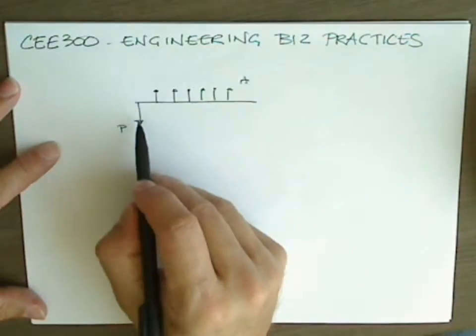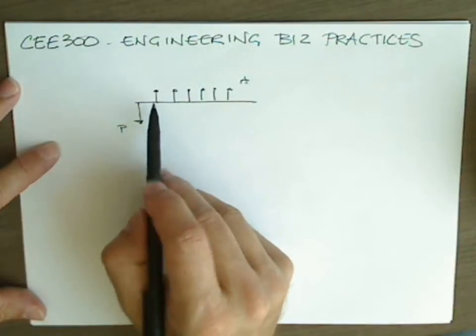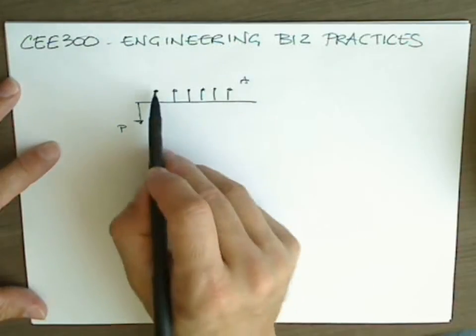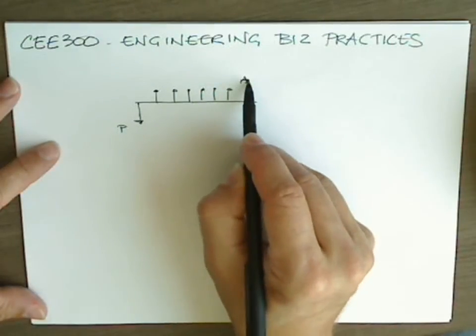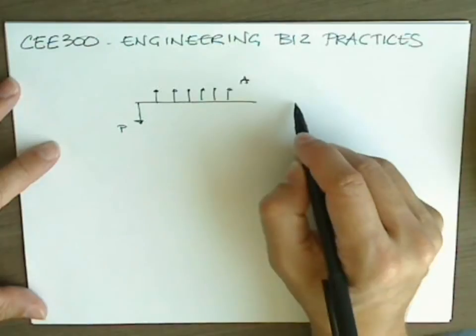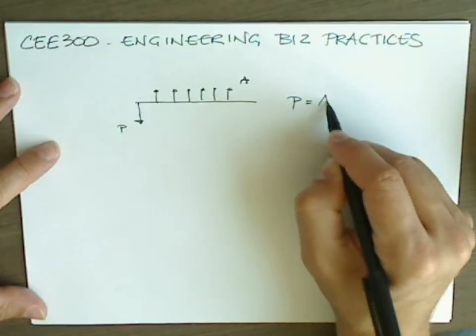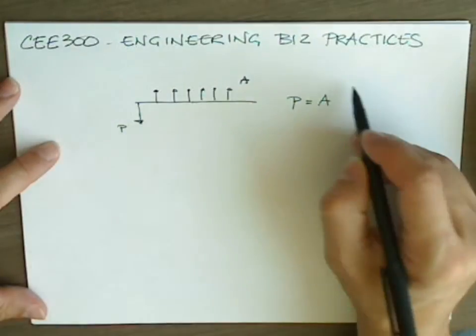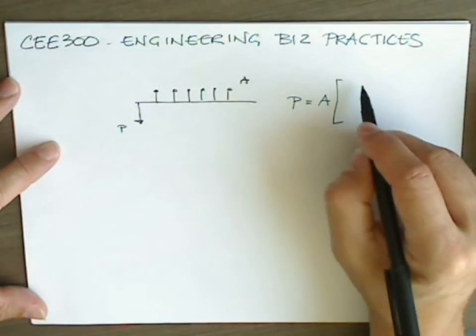In which a single payment at time zero entitles us to a constant stream of recurring payments, each one of these equal to a value A. We had a formula for computing the equivalence of A in present value terms, and it looked like this.